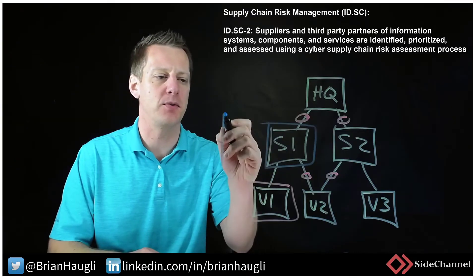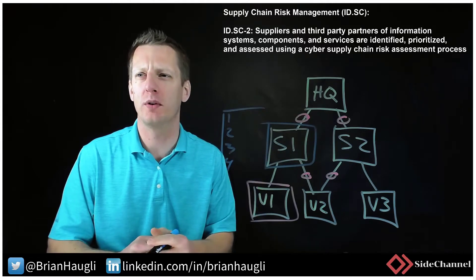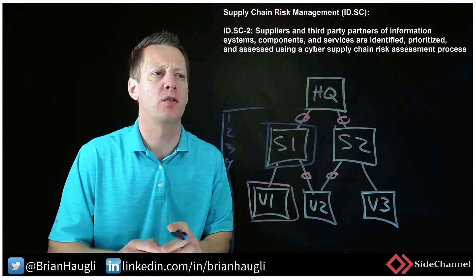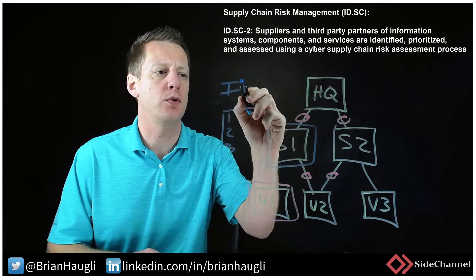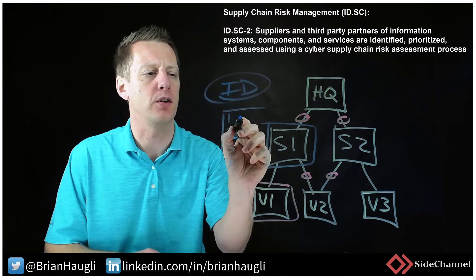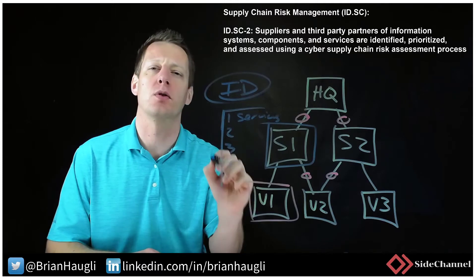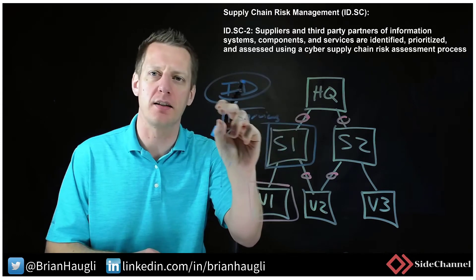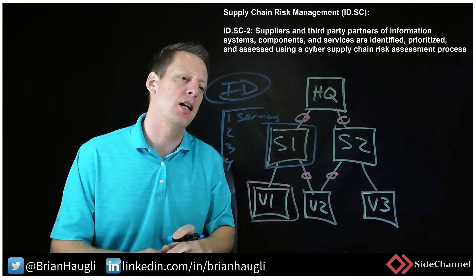We need to have a list of who our suppliers are, categorize what they have access to, and what type of services they are providing. Then we prioritize those vendors and suppliers. We identify who those vendors are, establish what services they are providing, prioritize those services to the organization, and then determine the criticality of those services to start assessing your supply chain.